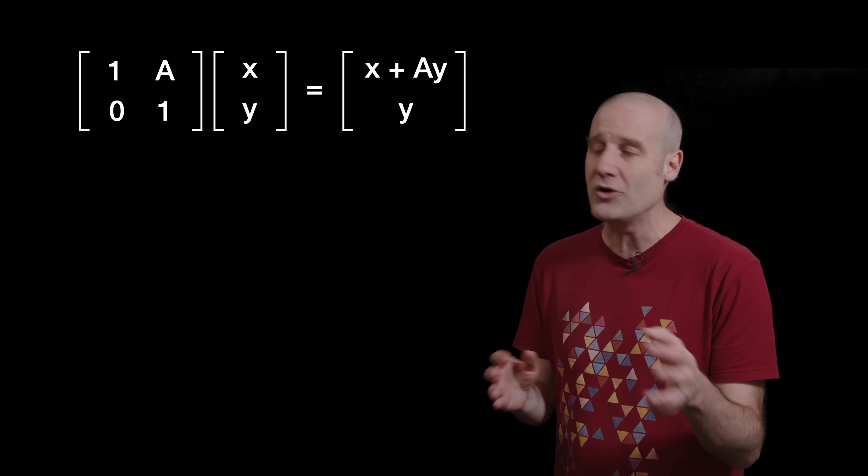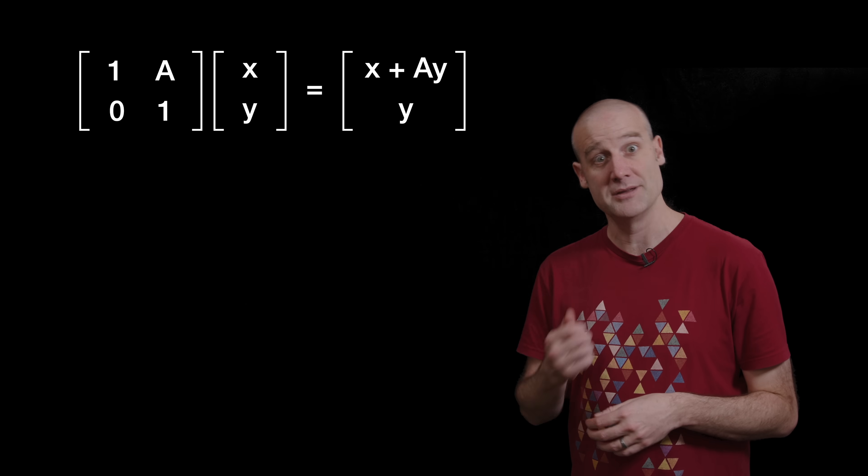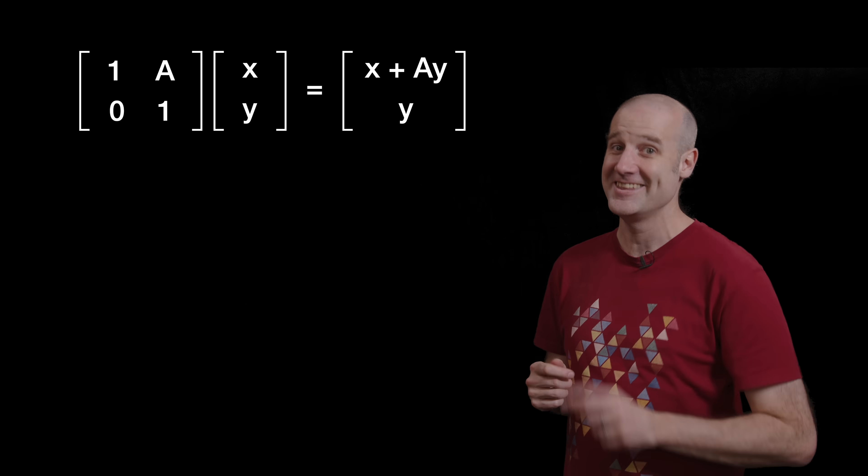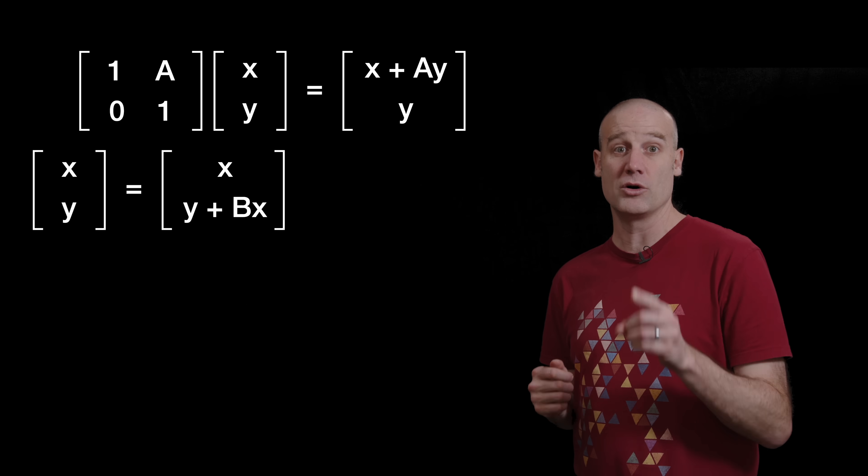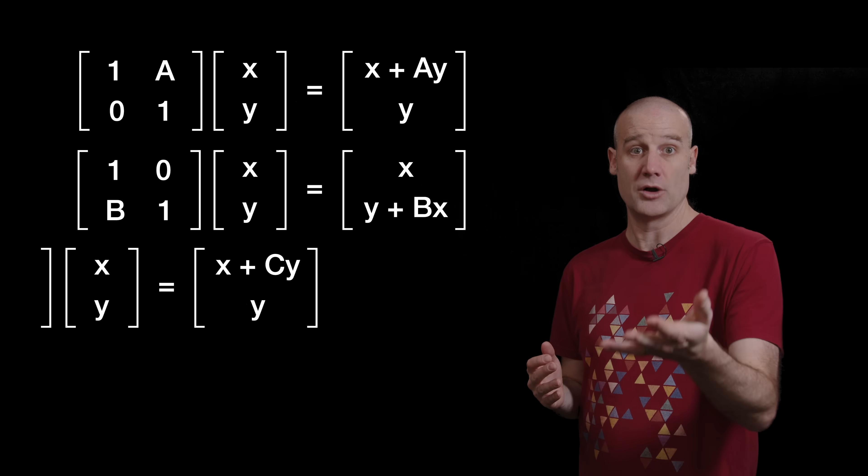and learn how to multiply matrices and double check it. If you can't be bothered then you're going to have to trust me. Now a vertical skew very similar and then we want a final third horizontal skew.